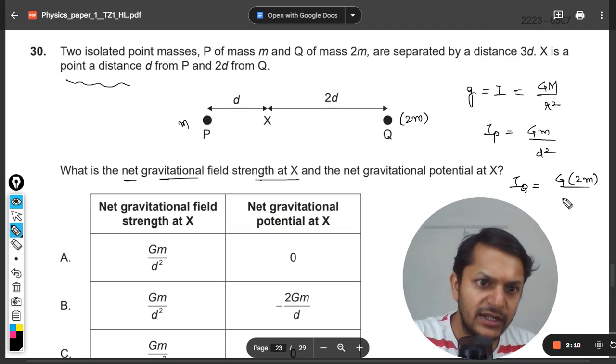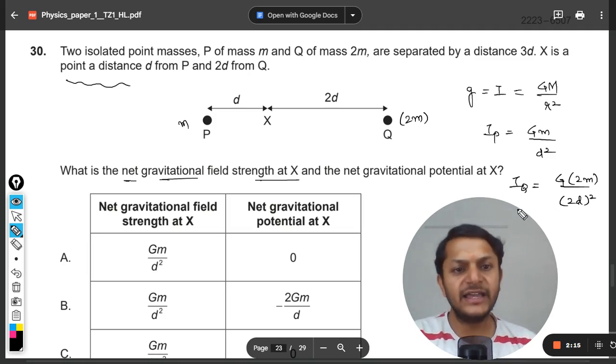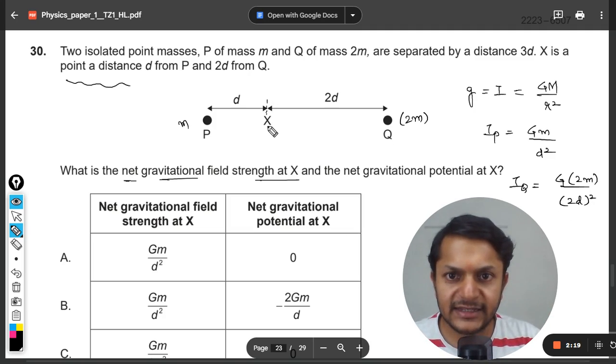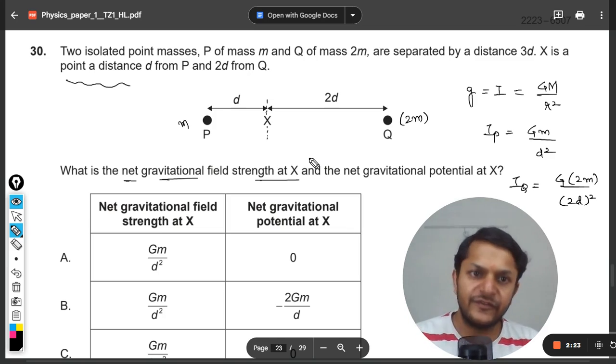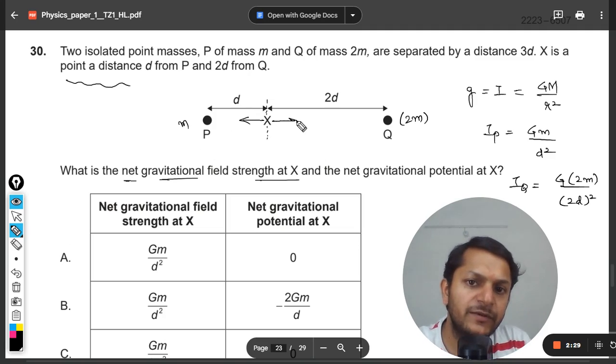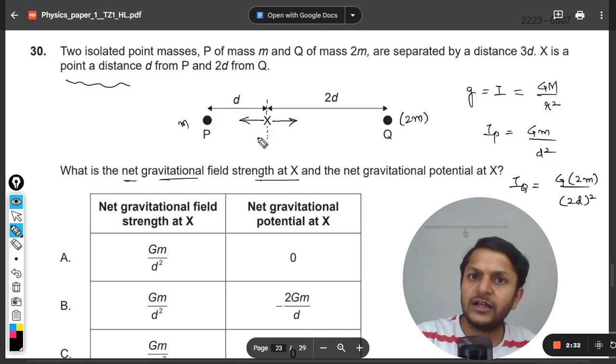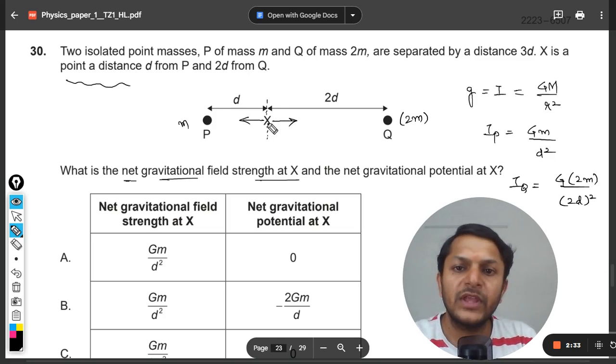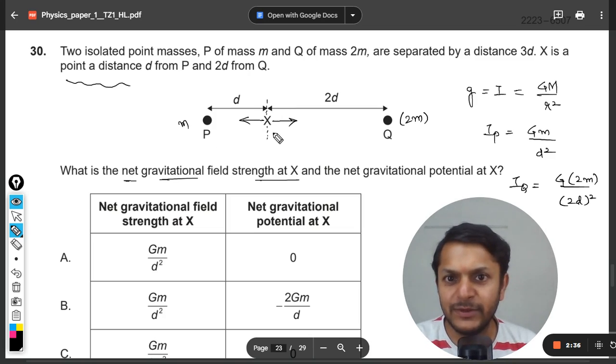And Iq will be G into 2m divided by 2d square. So Ip and Iq are known at the point X and it says that we have to find the net field. And they will be acting in the opposite direction. Obviously this will be attracting and the other mass will also be attracting.